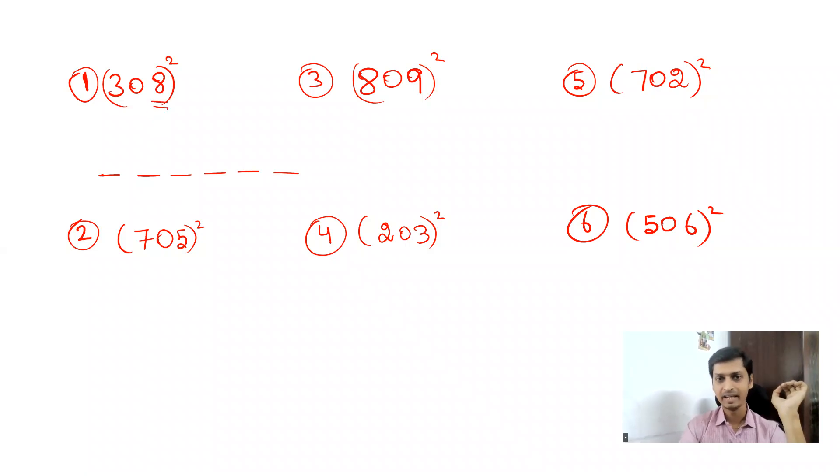The answer for the first question: first you want to square 8. What is 8 square? You get 64, so write that 64 here. Next, multiply this 3 and 8. What is 3 times 8? You get 24. Next, you want to double it, so if you double 24 you get 48. Write that 48 here. Next, you want to square this 3. If you square 3, you get 9, but you have two dashes here, so write it as 09. Your final answer is 94864.